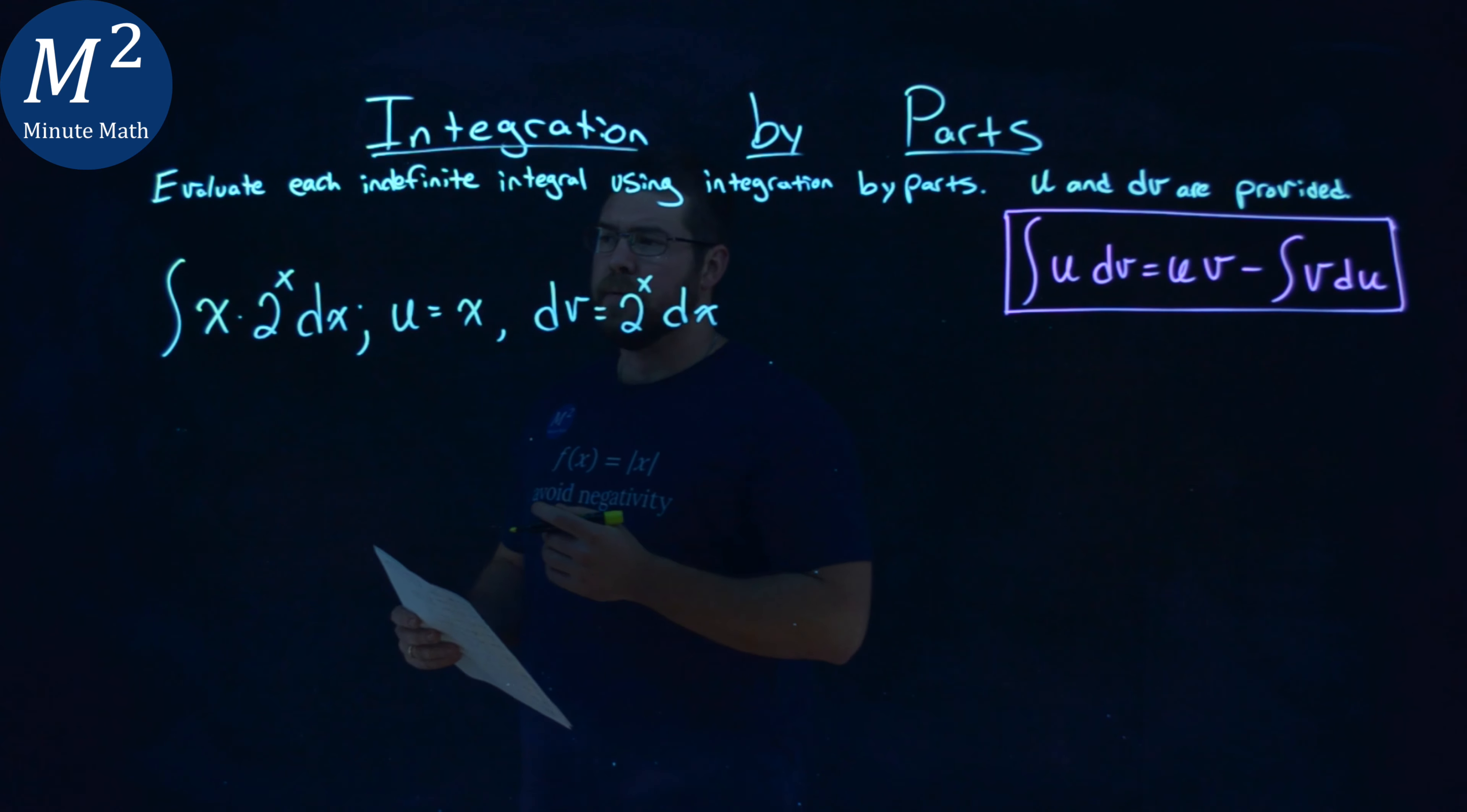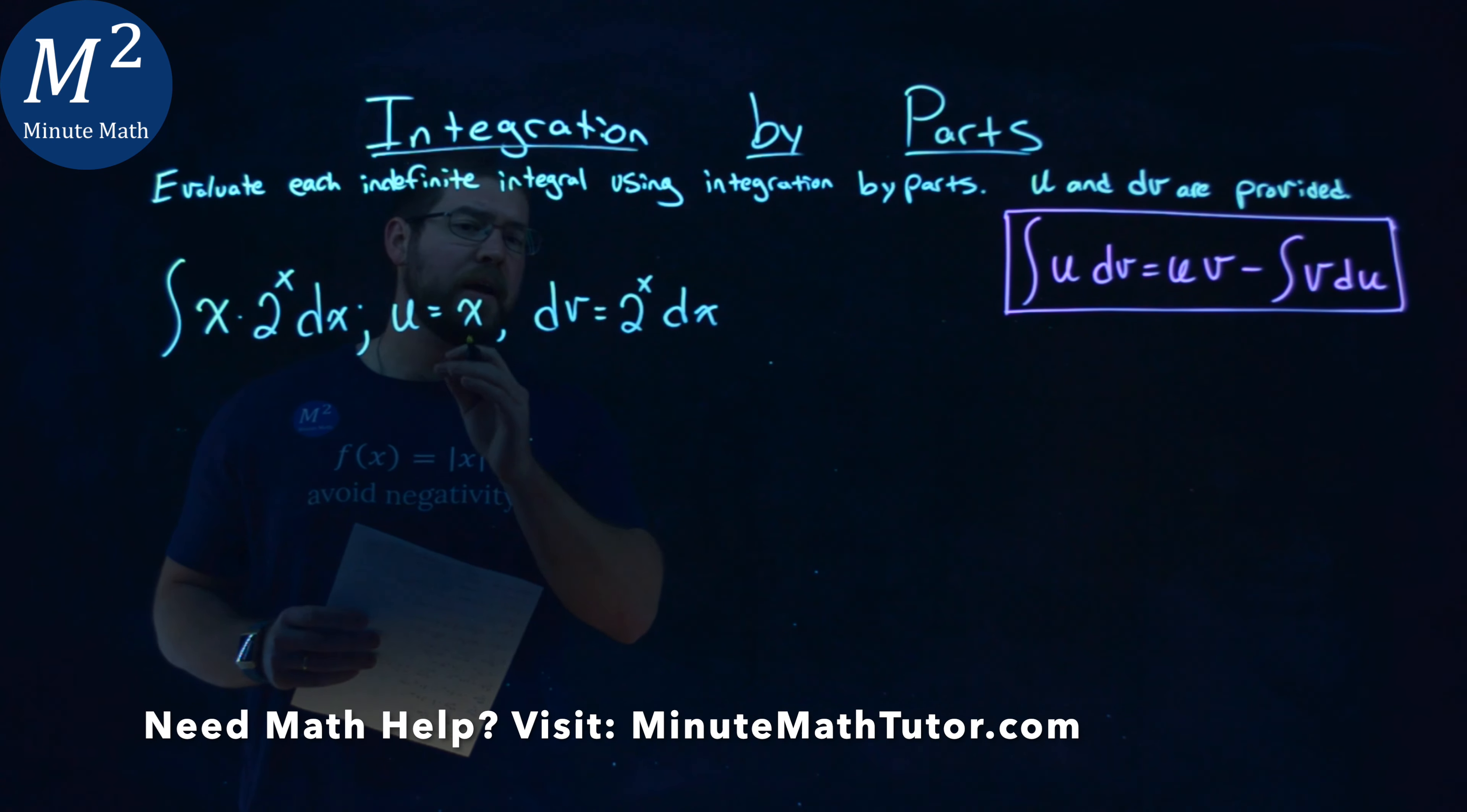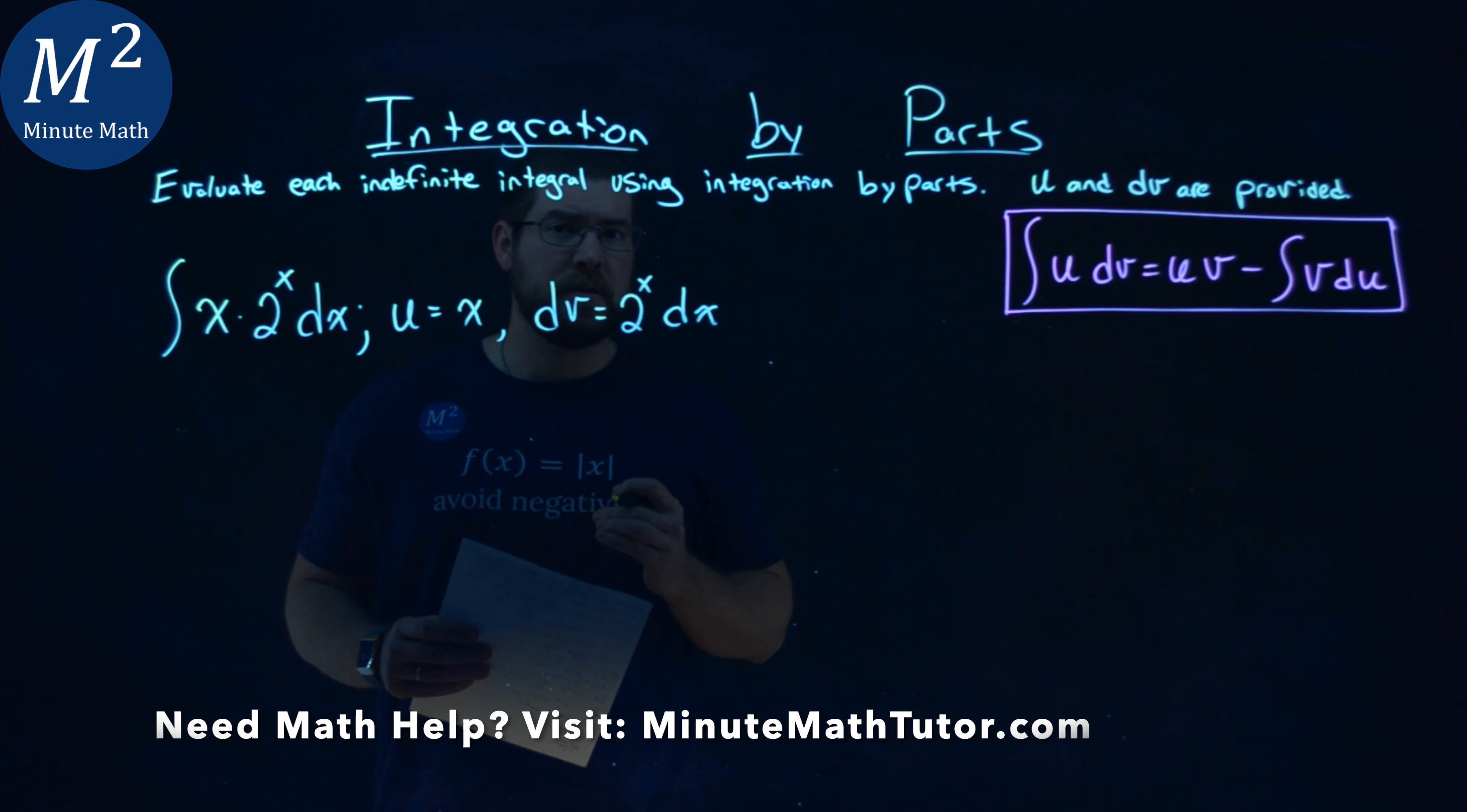We're given this problem right here, the integral of x times 2 to the x power dx, and we're given a u value of x and a dv value of 2 to the x dx, and we have to evaluate this indefinite integral using integration by parts.